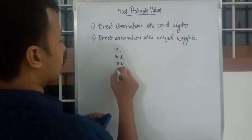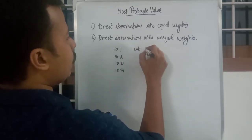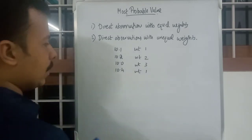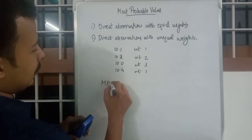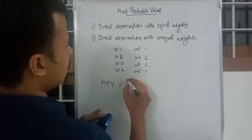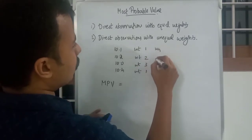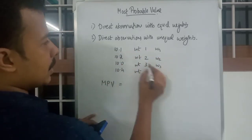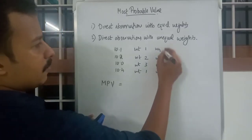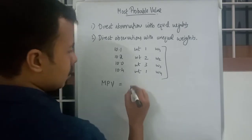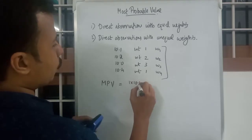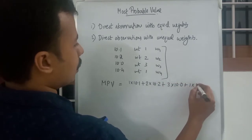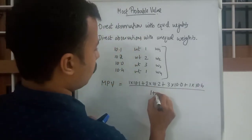The second case is direct observations with unequal weights — different weights for different values, for example weight 1, weight 2, weight 3, weight 1 for values like 10.0, 10.4, etc. In this scenario you find the MPV by multiplying each observation with its weight. Add these products in the numerator, and in the denominator find the sum of weight values. That is 1×10.1 plus 2×10.2 plus 3×10.0 plus 1×10.4, divided by 1 plus 2 plus 3 plus 1.